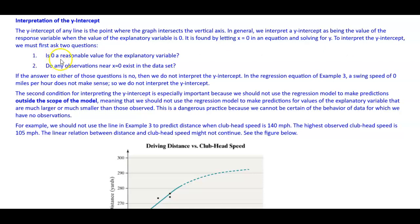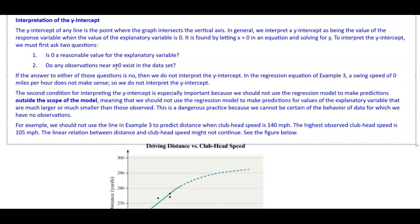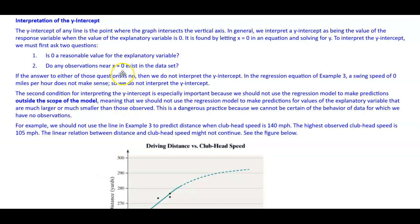Number one: is zero a reasonable value for the explanatory variable? And number two: do any observations near when x equals zero exist in the data set? If the answer to either of those questions is no, then we do not interpret the y-intercept. In the regression equation of Example 3, a swing speed of zero miles per hour does not make sense, so we do not interpret the y-intercept.